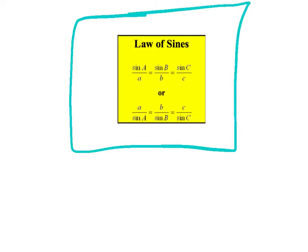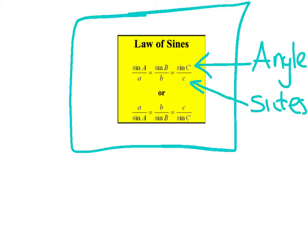It's sin A over a equals sin B over b equals sin C over c. Or you can flip these fractions upside down. You could put side a over sin A, b over sin B, c over sin C. We don't care which one you use, just memorize one of them. Notice, on top is all your uppercase letters, so these represent your angles. On the bottom is all your lowercase letters, so these represent your sides.